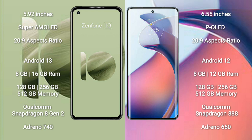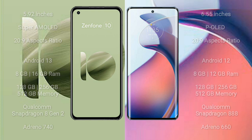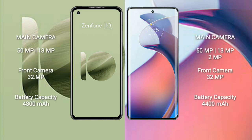Motorola Moto S30 Pro comes with 8GB and 12GB RAM and 128GB, 256GB, and 512GB internal storage. It features a Qualcomm Snapdragon 888 Plus processor and GPU Antioh 660. Asus Zenfone 10 has a rear dual-camera setup of 50MP plus 13MP and a front camera of 32MP.